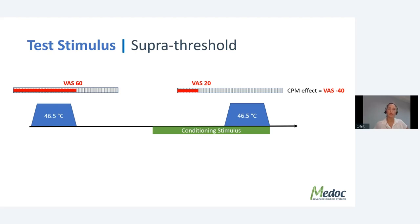After the conditioning stimulus is introduced, that same test stimulus may be rated as VAS-20, giving a CPM effect of VAS-40 — an effective CPM. The test stimulus can also be tonic or phasic: an elongated stimulus such as 30 seconds, or in Canada 120 seconds, where participants rate along the stimulus at different time points or continuously using a computerized visual analog scale. Or a phasic stimulus, where the average across stimuli is compared before and after conditioning.